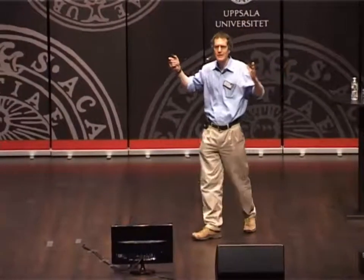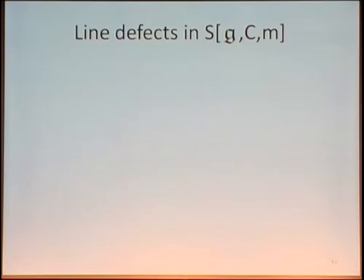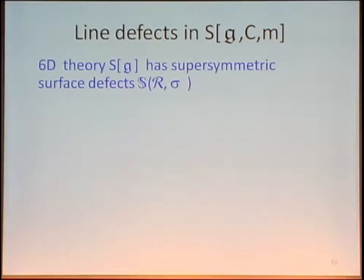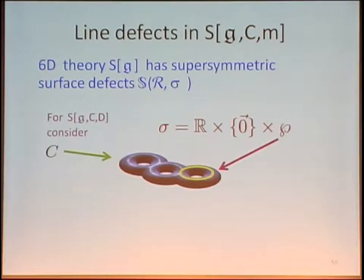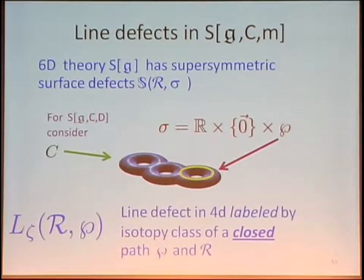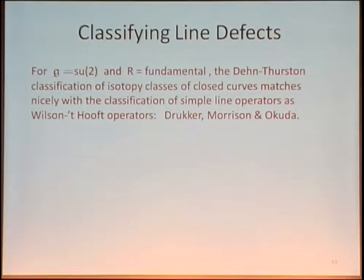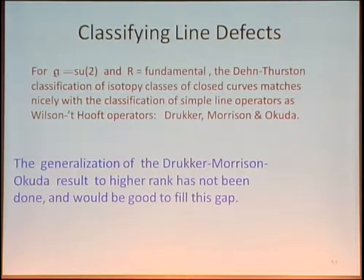Now what happens in theories of class S? The six-dimensional theory has supersymmetric surface defects labeled by a surface Σ. We can make a line defect out of a surface defect by wrapping one leg around a closed curve. Take a yellow closed curve P on the ultraviolet curve C, wrap one leg around it, and you get a line defect in four dimensions, labeled by the closed curve P — it depends only on the isotopy class. For G = SU(2), in a beautiful paper of Drukker, Morrison, and Okuda, they showed that the classification of isotopy classes of closed curves on C — the Dehn-Thurston classification — matches perfectly with the classification of Wilson and 't Hooft operators in the theory S. The generalization of the Drukker-Morrison-Okuda result to higher rank has not been done — another gap in our knowledge.